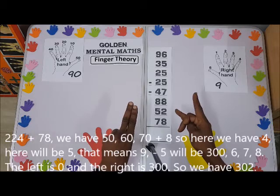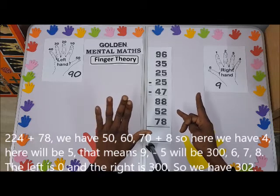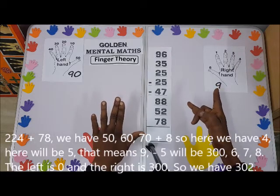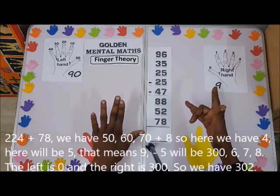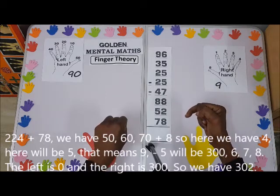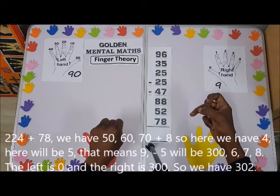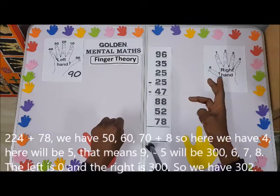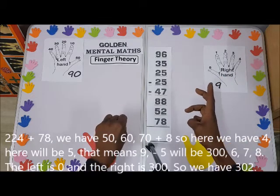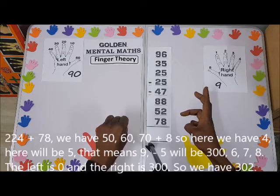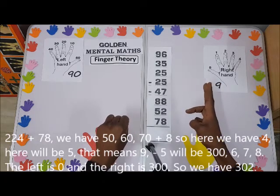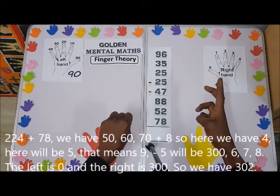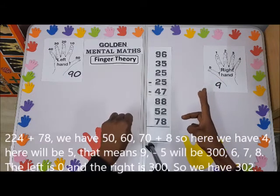224 plus 78: we have 50, 60, 70, plus 8. Here we have 4, here will be 5, that means 9. Now here 5 will be 300 — 6, 7, 8. So we have 8, which will be 302. Here is 0, so this is 300, showing the sign of 300: 302.